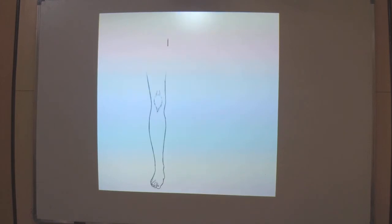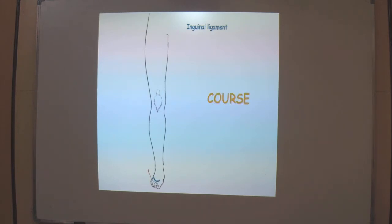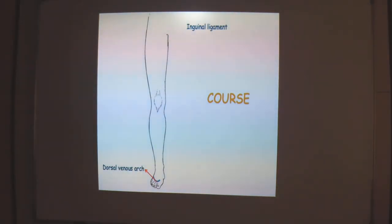Now we are going to see the course of the great saphenous vein. It begins on the dorsum of the foot as the continuation of the medial dorsal venous arch. The dorsal venous arch is supplemented by two more veins, one on the medial side and one on the lateral side. This medial vein is the medial marginal vein, which joins the medial end of the dorsal venous arch to form the great saphenous vein.